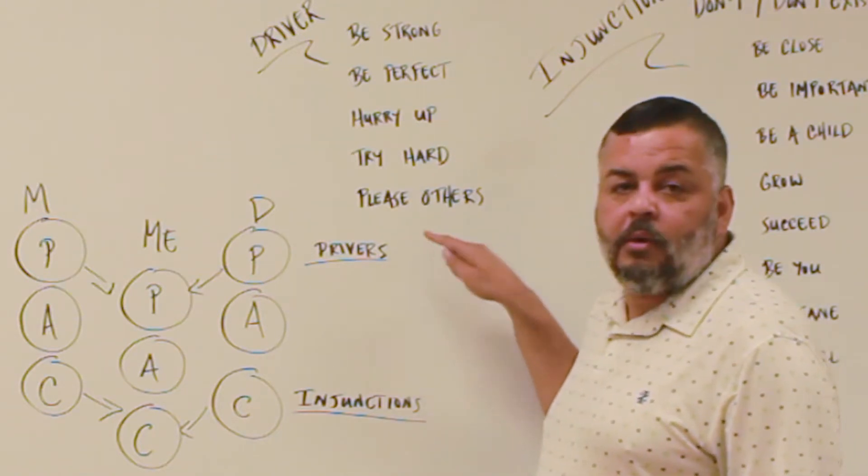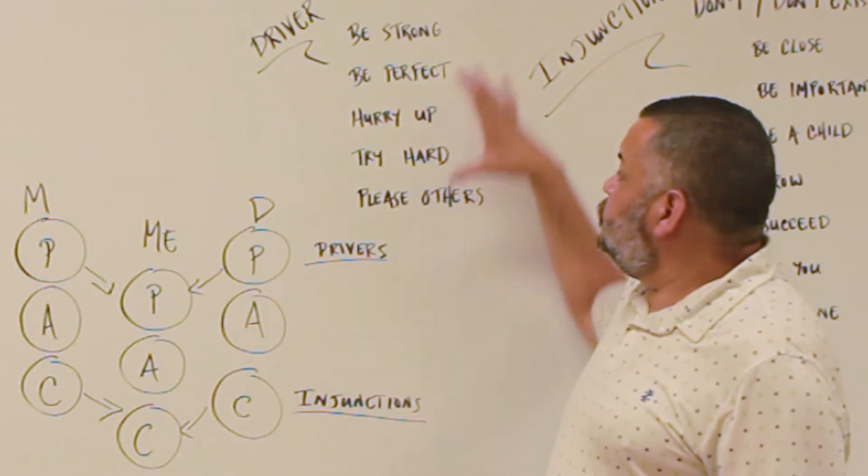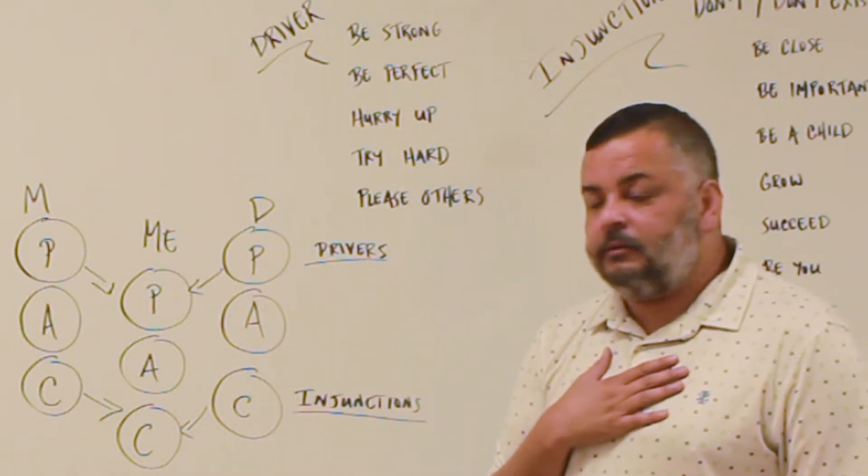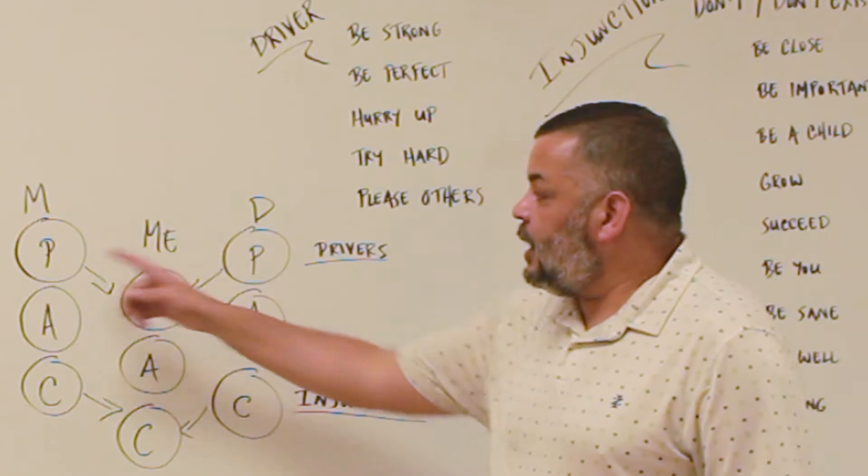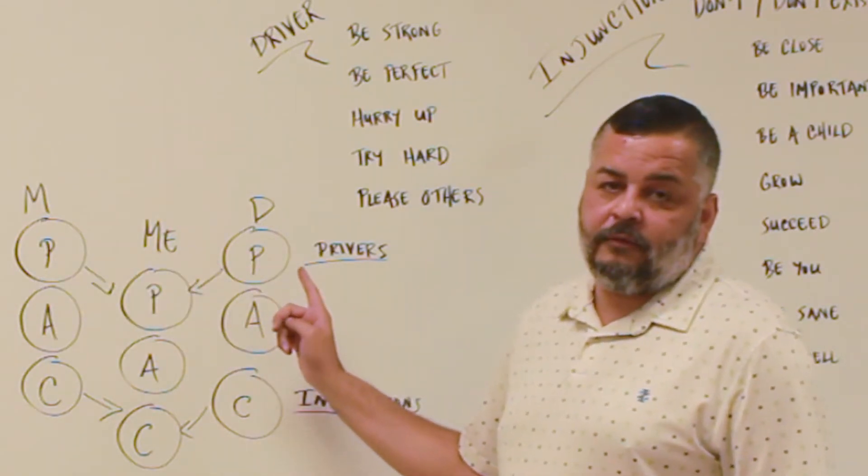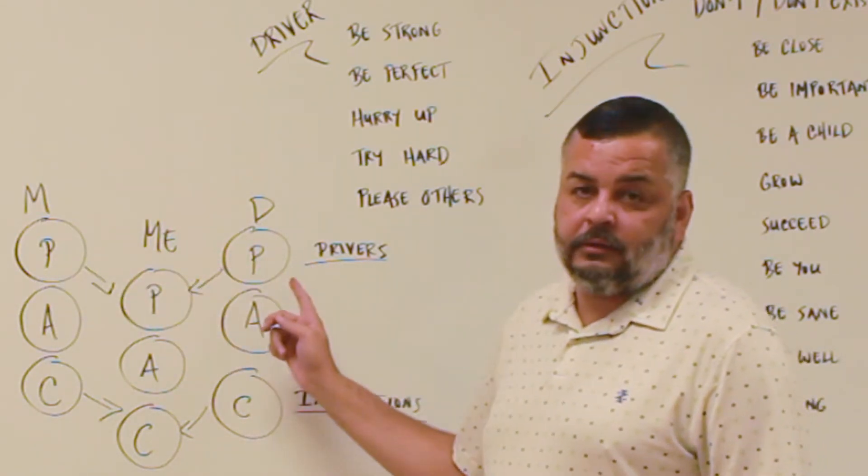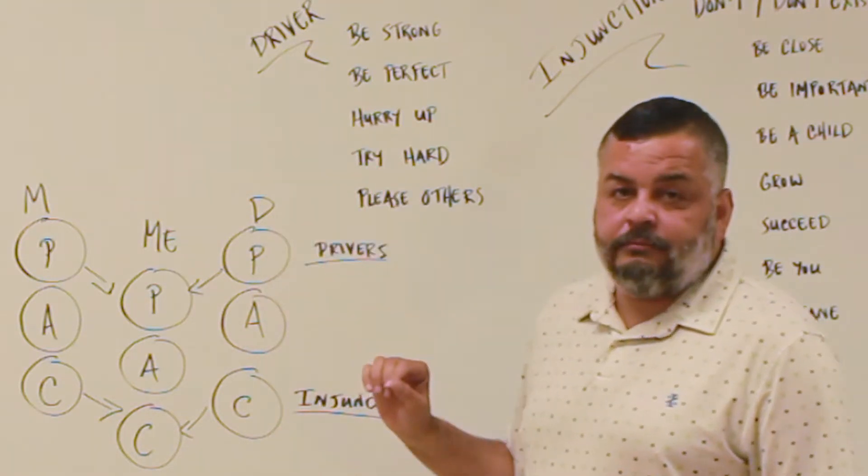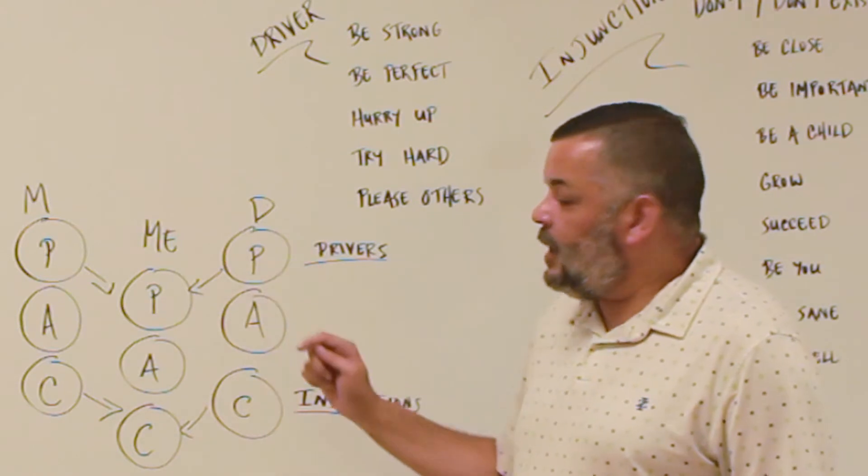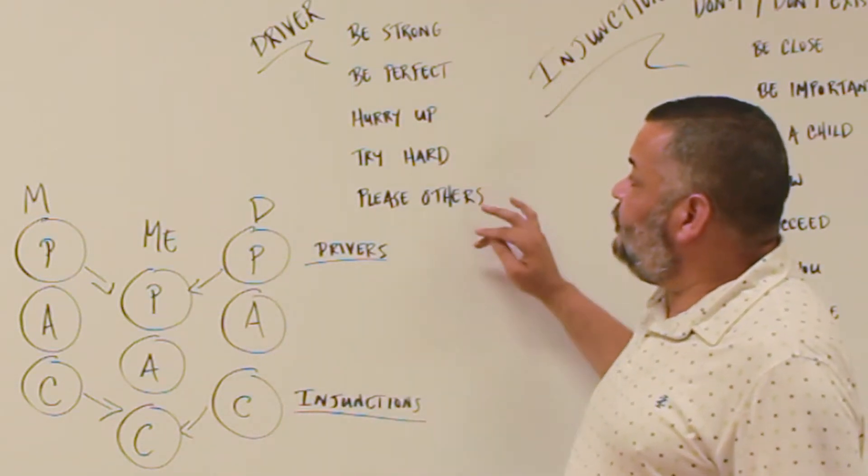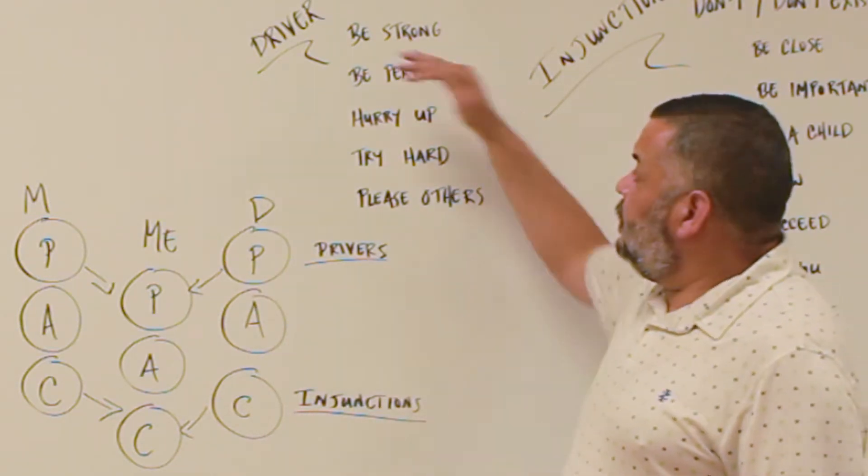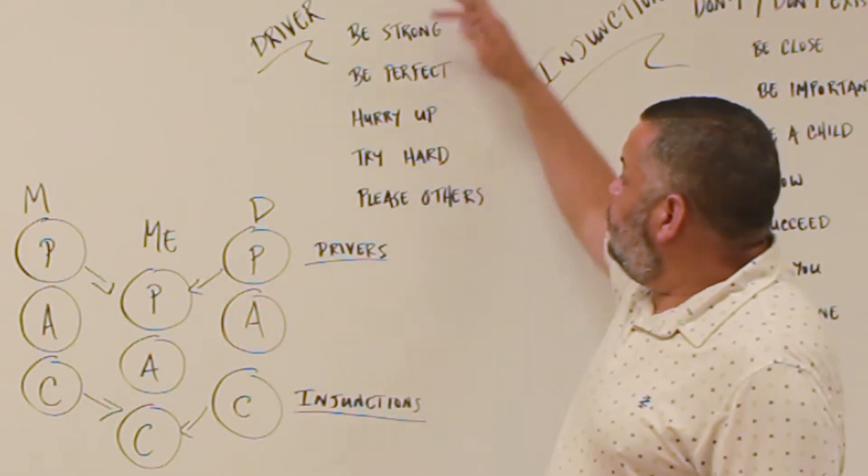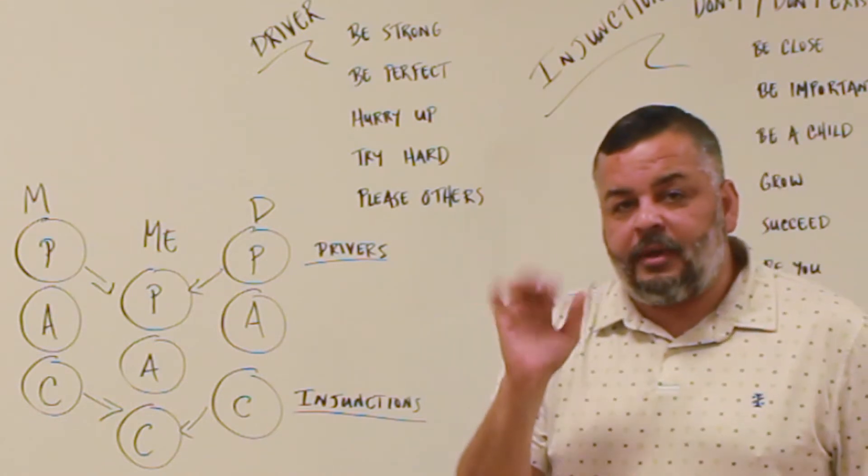Let me tell you a little bit about what driver behavior is. Driver behavior is the way that I learned as a child to be okay with the big people in my life or to be okay with my parents. The way that I could be okay with them is if I behaved in a certain way. The reason why I call it driver behavior is because this is what drives our behavior. And there are five driver behaviors.